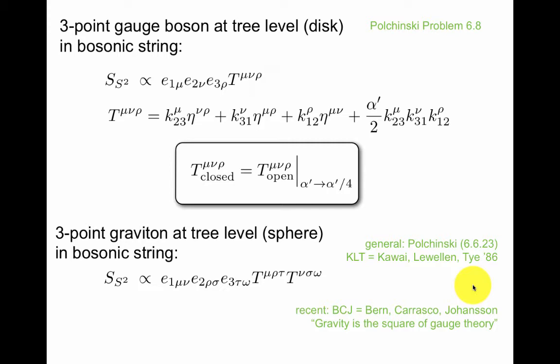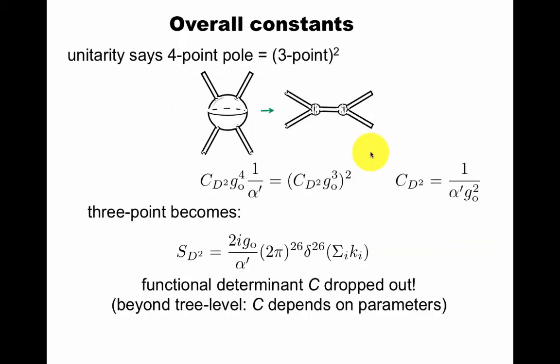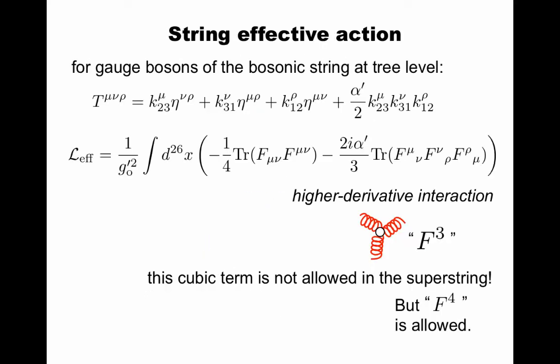Polchinski nicely fixes the overall constants. We were worried about these functional determinants, C. Because the residue of the pole here has to be related to square of three-point vertices, you get this kind of relation. So you can actually solve this for C. So you see, when you plug this back in, the C drops out.